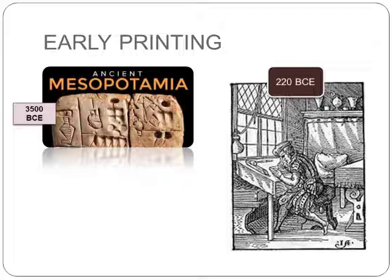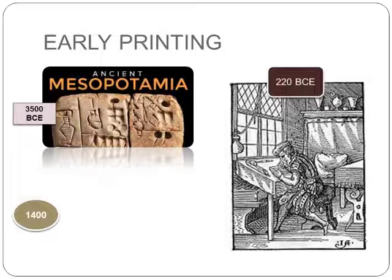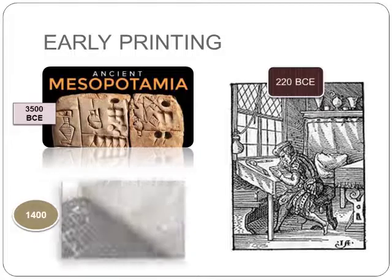The writing was back to front — in mirror form — so that it would print the right way around. By about the 9th century, the Chinese printed books this way. In Europe, they printed religious pictures on cloths with wood blocks. From about 1400, they printed many of these and other pictures on paper.